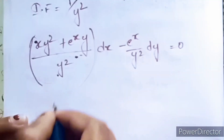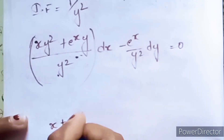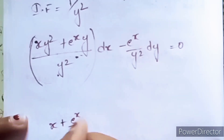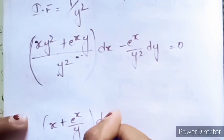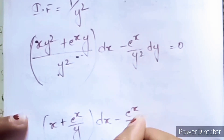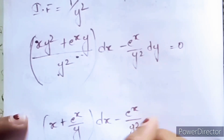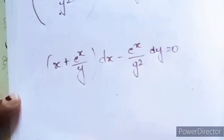Multiplying 1/y² with the given differential equation, we get (x + eˣ/y) dx − (eˣ/y²) dy = 0.